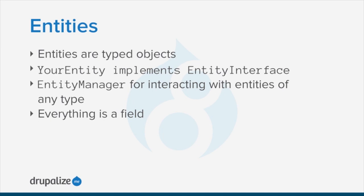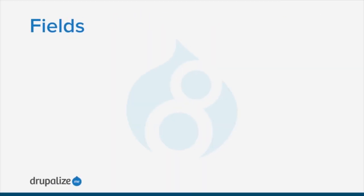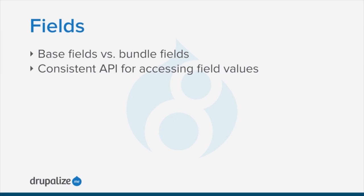The ID, the title, the body — they're all handled the same way. In order to allow the system to distinguish between fields that are required for all entities of a given type, like the node title, and those that are user configurable, like the node body, the new EntityField API introduces the concept of base fields and bundle fields. But these new field objects all implement the same interface, and thus you've got a consistent API for dealing with field values regardless of the field type.